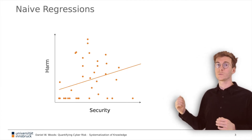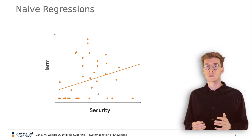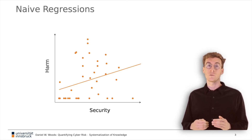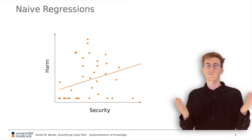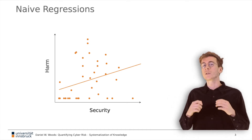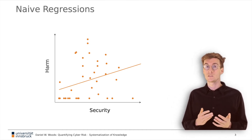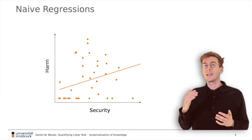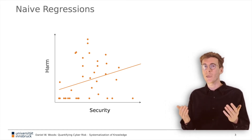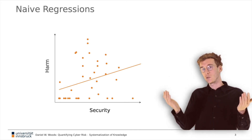We illustrate this with artificial data showing the same results. The line of best fit shows that entities who invest more in security tend to also suffer more harm. We don't believe it's the case that security investments cause greater harm. Rather, we think entities who anticipate more harm will also invest more in security.